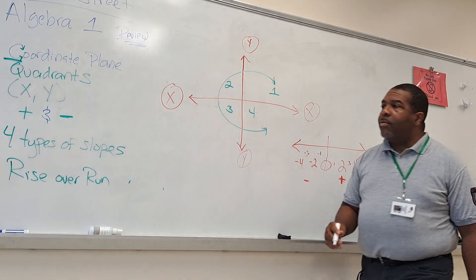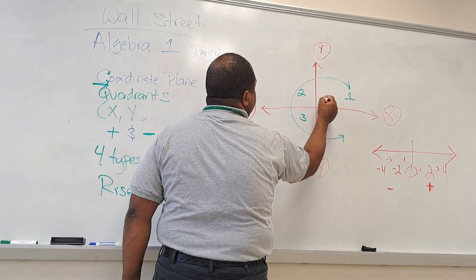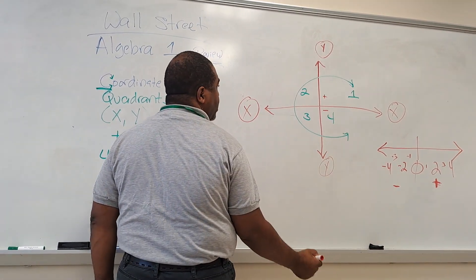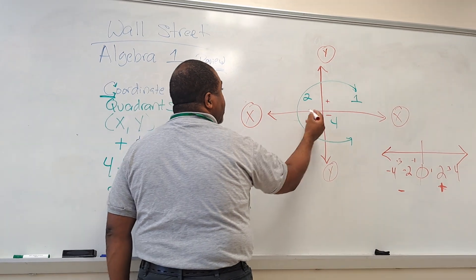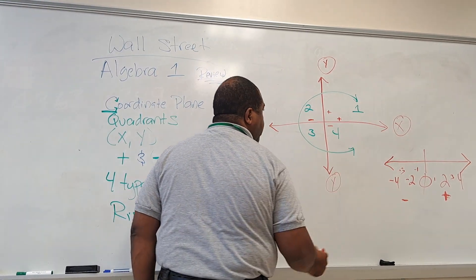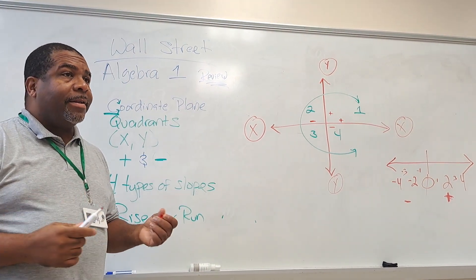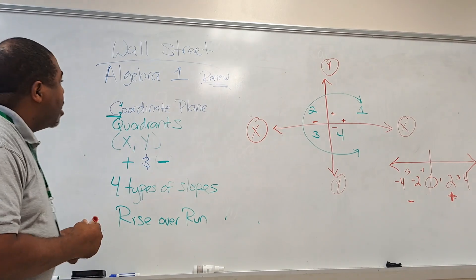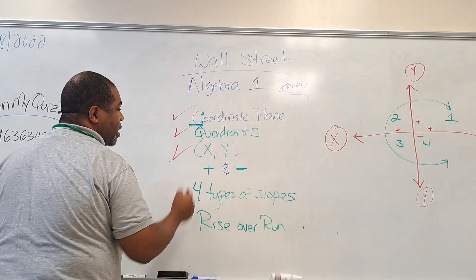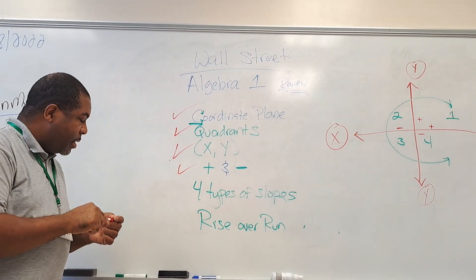It's the same thing with our coordinate plane. As we go up, these are positive numbers. As we go down, these are negative numbers. As we go to the left, they're negative numbers. As we go to the right, these are positive numbers. Does that make sense? You remember that? Good. So we talked about the coordinate plane, the quadrants, the X and Y, and positive and negative.